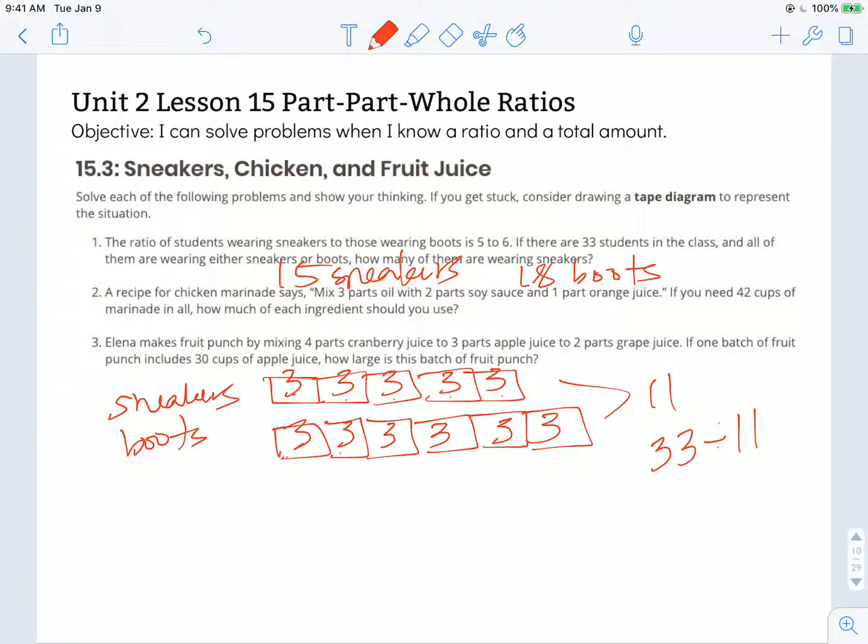Number 2, a recipe for chicken marinade says mix 3 parts oil with 2 parts soy sauce and 1 part orange juice. So I have oil, soy sauce, and orange juice. So I have 3 parts oil, 2 parts soy sauce, and 1 part orange juice.